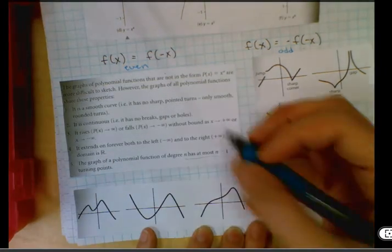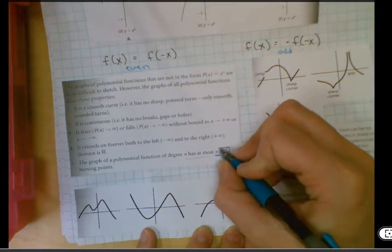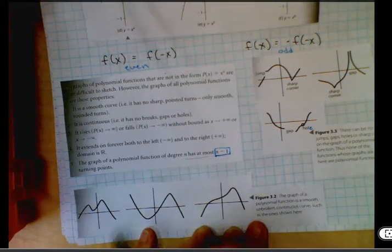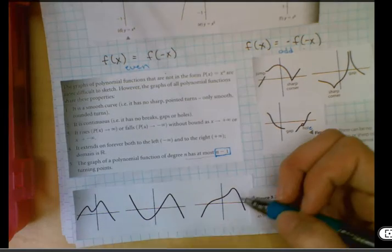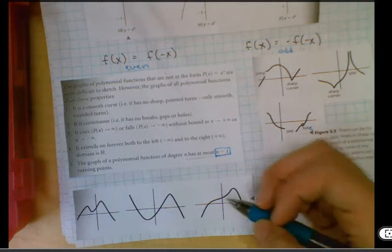And then it has, at the most, n minus one turns. So if it's a cubic, it has no more than two turns. If it's a linear, it has no turns. If it's quadratic, it only has one turn.